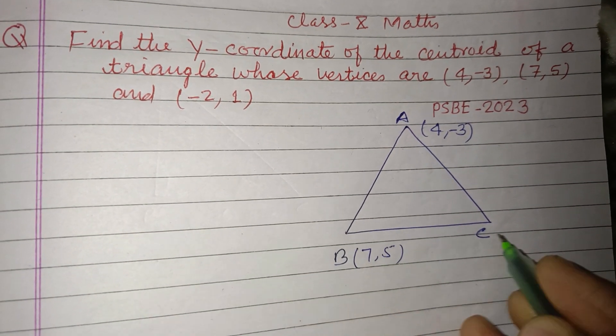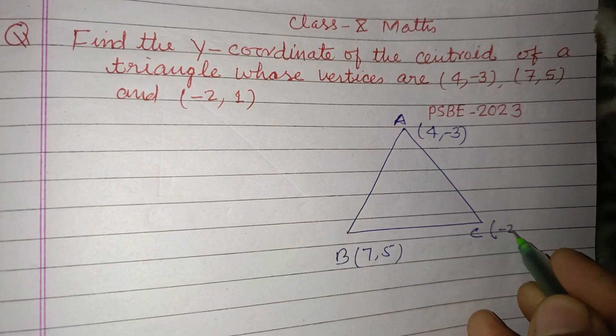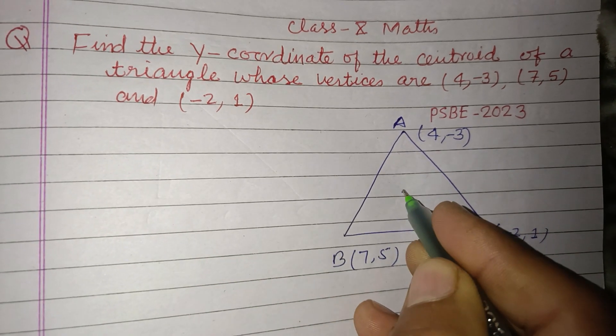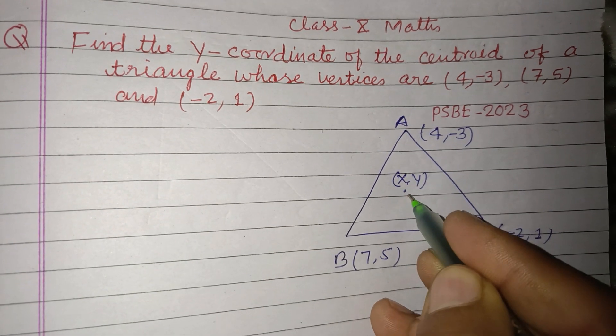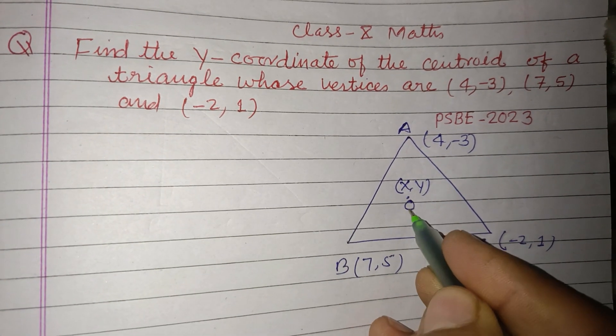B is (7, 5), and C is (-2, 1). The centroid has coordinates (x, y), which we'll call O.